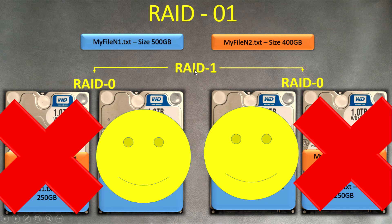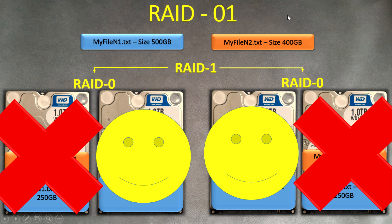It is really great for databases because databases need read and write performance and fault tolerance. You can survive with no problem when one disk fails, or even a second disk failing, depending on which disk it is. When one disk fails, just go straight to your data center and replace it. That's all guys — this is RAID 01. See you in the next lesson.